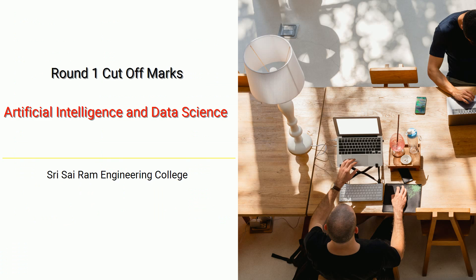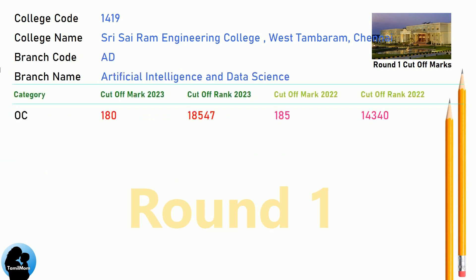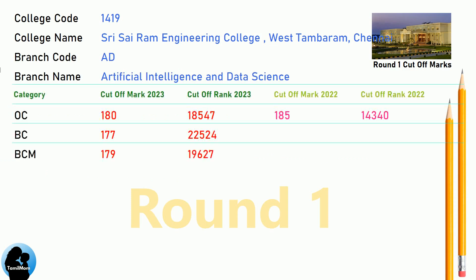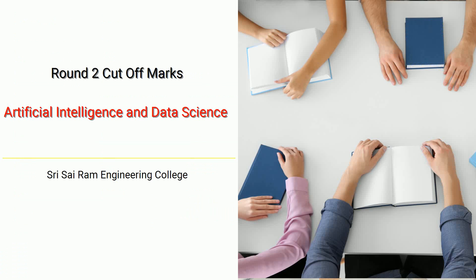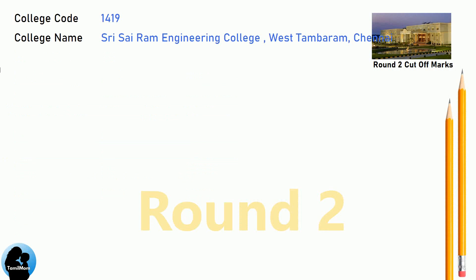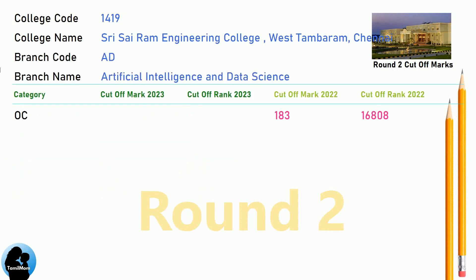DNA Round 1 Cut-off for Shri Sairam Engineering College in Artificial Intelligence and Data Science. DNA Round 2 Cut-off for Shri Sairam Engineering College in Artificial Intelligence and Data Science.